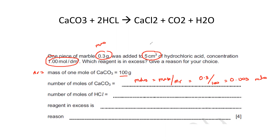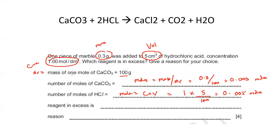To get the moles of HCl, we have the volume and concentration. For acids and alkalis we use: moles = concentration × volume, but volume must be in dm³. Concentration is 1, and the volume is 5 cm³, so we divide by 1000 to get 0.005 dm³. Therefore moles of HCl = 1 × 0.005 = 0.005 moles.